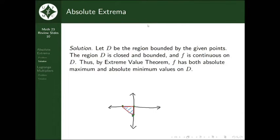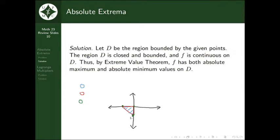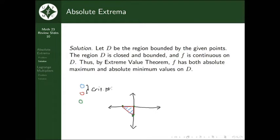How will we find the extrema? We can look in three color-coded places: the blue inner region, the red boundaries, and the green intersection points of those boundaries. These three parts comprise the entire region, so it's guaranteed that our absolute extrema are found on at least one of them. For the inner region and the boundaries, we check their critical points, and for the green intersection points, we check all of them.